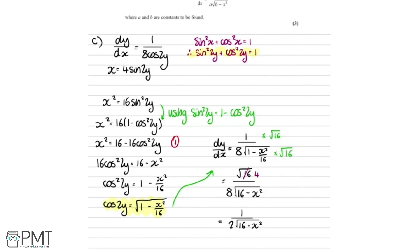We get one mark for the working to eliminate y's from the right-hand side of dy by dx, a second mark for arriving at the correct expression for dy by dx, and a final mark for simplifying into the required form.